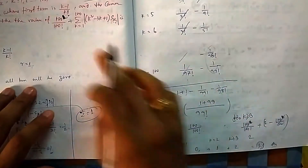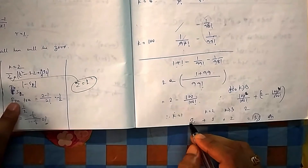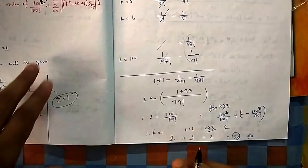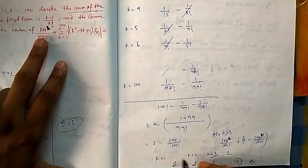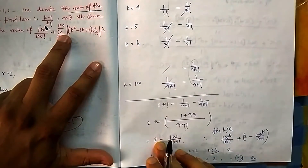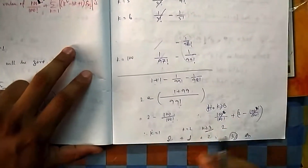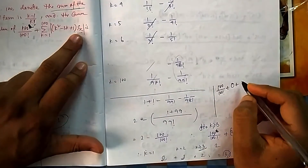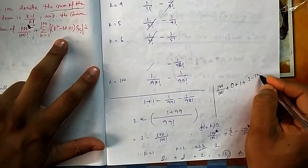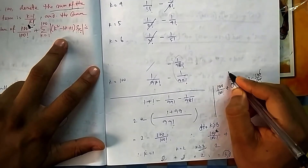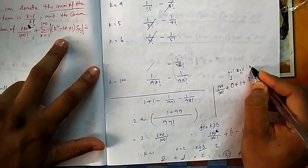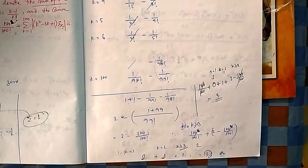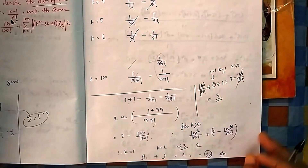Adding everything together: for k=1 it is 0, for k=2 it is 1, and for k≥3 onwards the telescoping gives us 2 minus 100/100!. Combined with the 100/100! term given in the problem, the 100/100! terms cancel, and adding 0+1+2 = 3. So the final answer to question 17 is 3. Since it is an integer type question, the answer must be between 0 and 9, and 3 satisfies that.